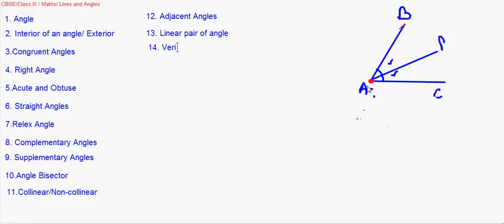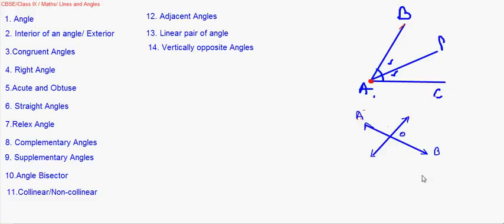Then comes vertically opposite angles. When two lines intersect at point O, the angles facing one another are vertically opposite angles. So angle AOD and angle BOC are vertically opposite, and angle BOD and angle AOC are also vertically opposite angles.